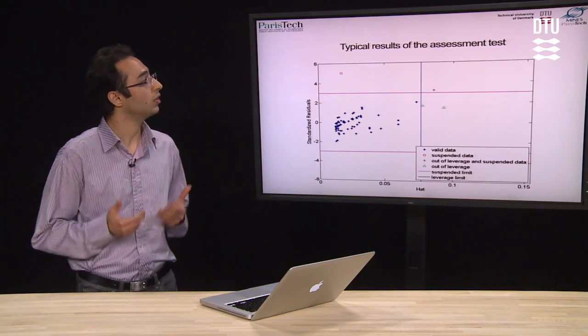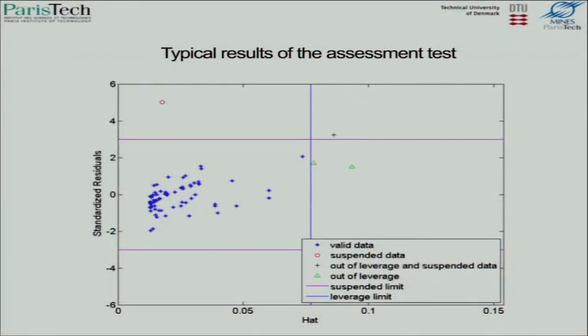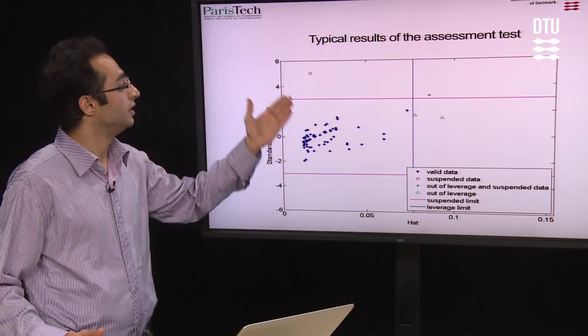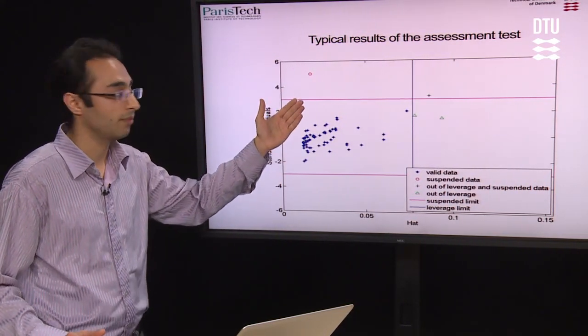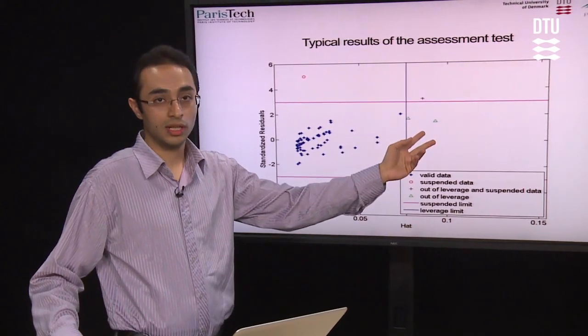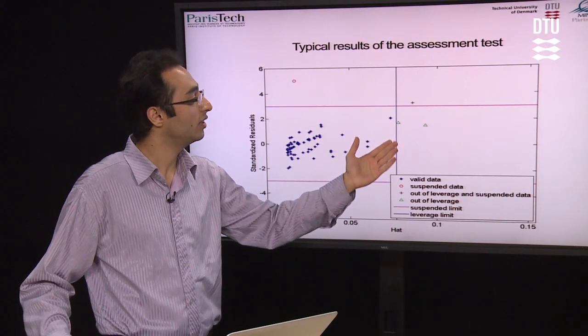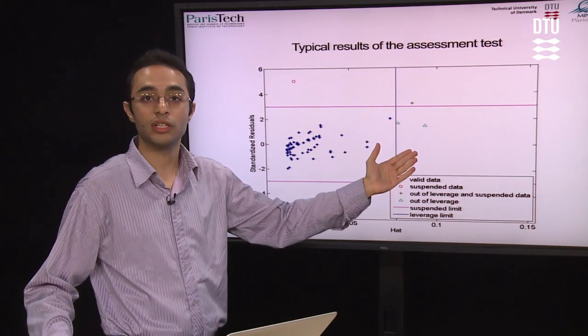This figure shows typical results of the assessment test. The blue dots represent the reliable data. The red circle represents the unreliable and doubtful data. Two green triangles represent that the data are out of leverage and applicability range of our model.